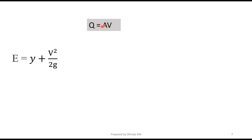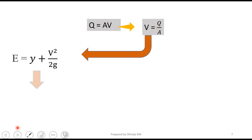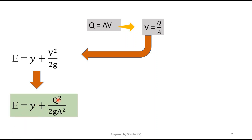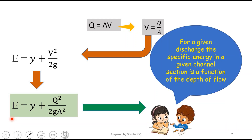We know that discharge Q = A·v, so v = Q/A. Substituting into the specific energy equation: E = y + Q²/(2g·A²), since v² = Q²/A². Thus, for a given discharge, the specific energy in a given channel section is a function of depth of flow alone — for a given discharge, specific energy depends only on the depth of flow.